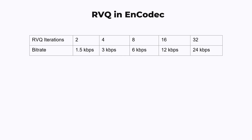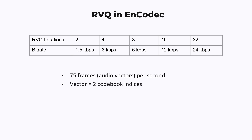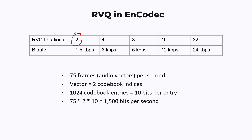Let's do some quick math to see how the number of iterations and the bit rate matches up. The Encodec model produces 75 frames per second, and each frame gets transformed into an audio vector. Let's say we are using the most aggressive compression possible, so we are only doing two iterations of residual vector quantization. This means a vector corresponds to two codebook indices. In this model there are 1024 codebook entries, so it takes 10 bits of information to represent one entry. Multiplying everything together, we get 1500 bits per second, or 1.5 kilobits per second.